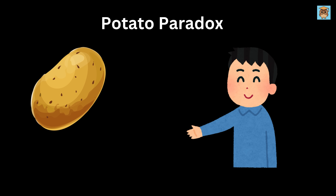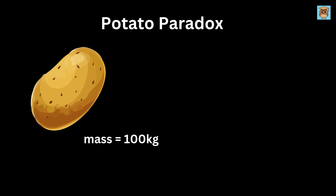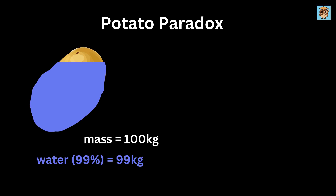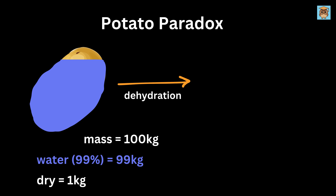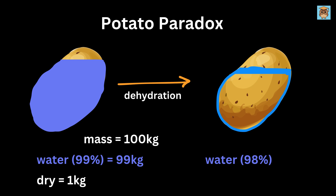We will start by explaining the potato paradox. Imagine you start with 100 kilograms of potatoes that are 99% water, so only 1 kilogram is dry matter. After dehydrating the potato, the water content drops to 98%, but the dry matter remains 1 kilogram.